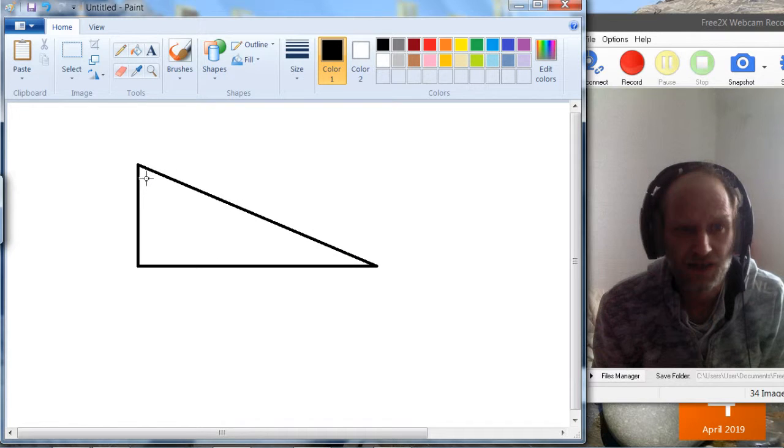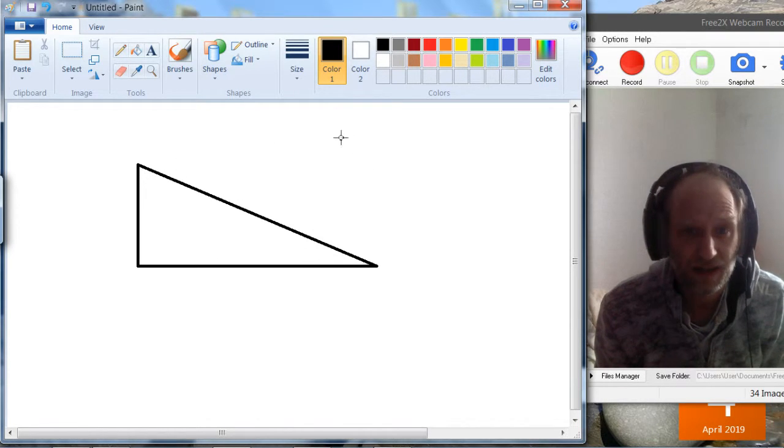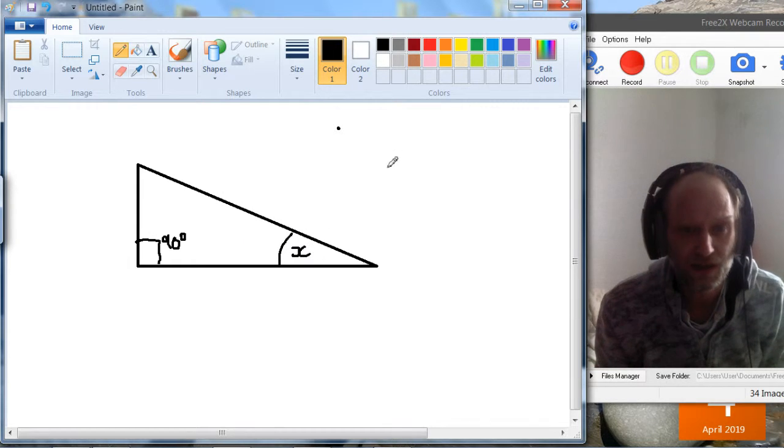So let's put that in. So if this is 90 degrees and let's say we've got an angle x here, then this angle here will be 90 minus x.